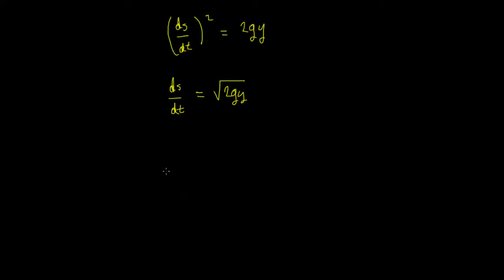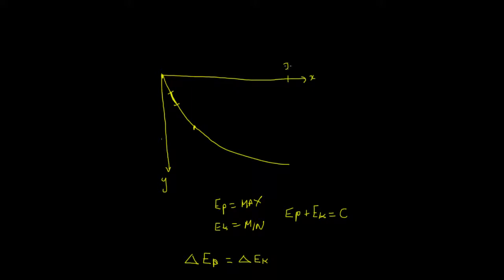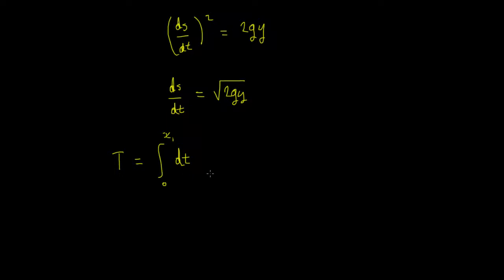What we're trying to do is minimize the time T. From the calculus of variations, we're looking for the characteristic functional equation for this system. The time T from zero to x₁ is given by integrating dt. Rearranging ds/dt = √(2gy) gives dt = ds / √(2gy), which can be written as one over √(2g) — since g is a constant — times the integral from 0 to x₁ of 1/√y, with ds remaining.